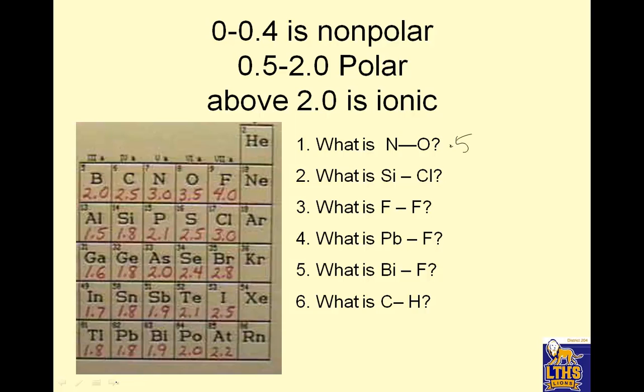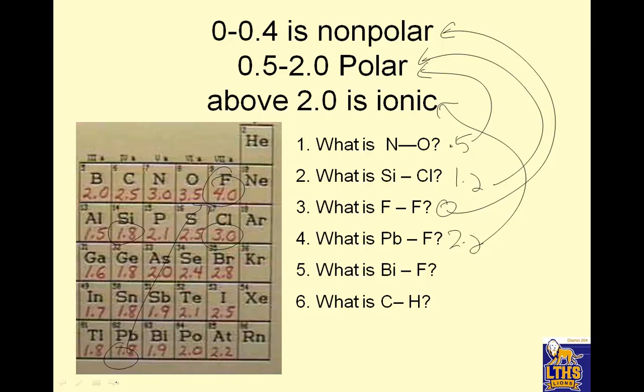N to O is 0.5 - that's polar. Si to Cl: Si is 1.8, chlorine is 3.0, that difference is 1.2 - that's polar. F to F: 4.0 minus 4.0 is 0 - that's nonpolar. Lead to fluoride: lead is 1.8, fluoride is 4.0, that's 2.2 - that's ionic. You get the idea.